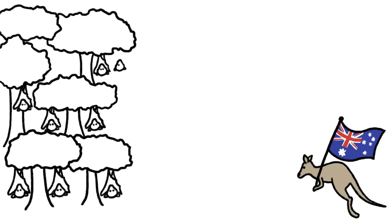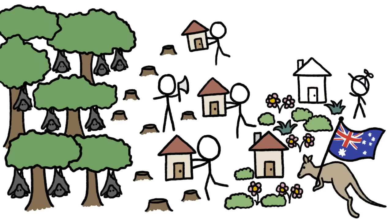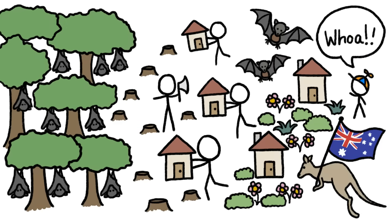And in Australia, human Hendra cases are cropping up as destruction of native forests forces fruit bats to feed in suburban gardens.